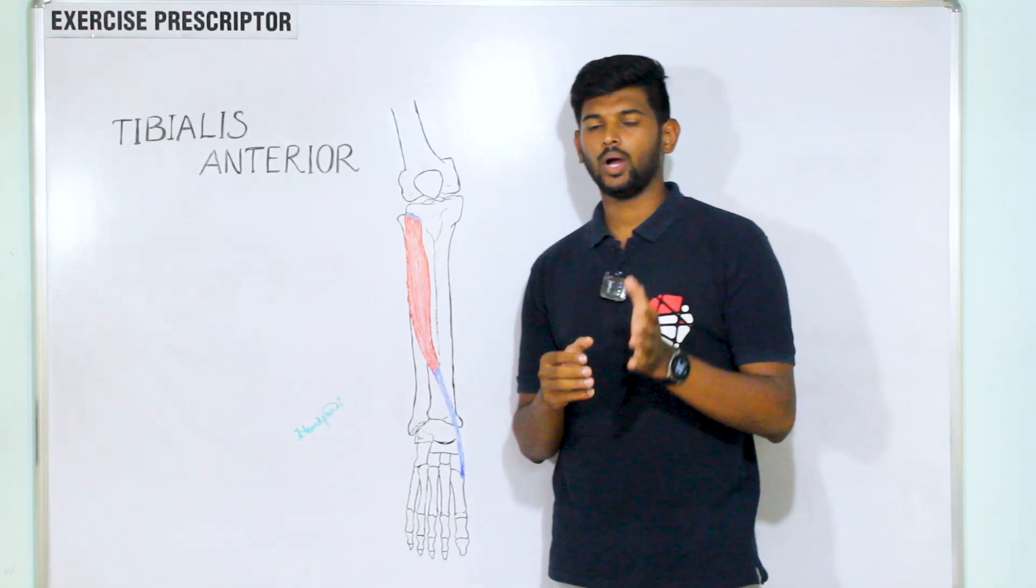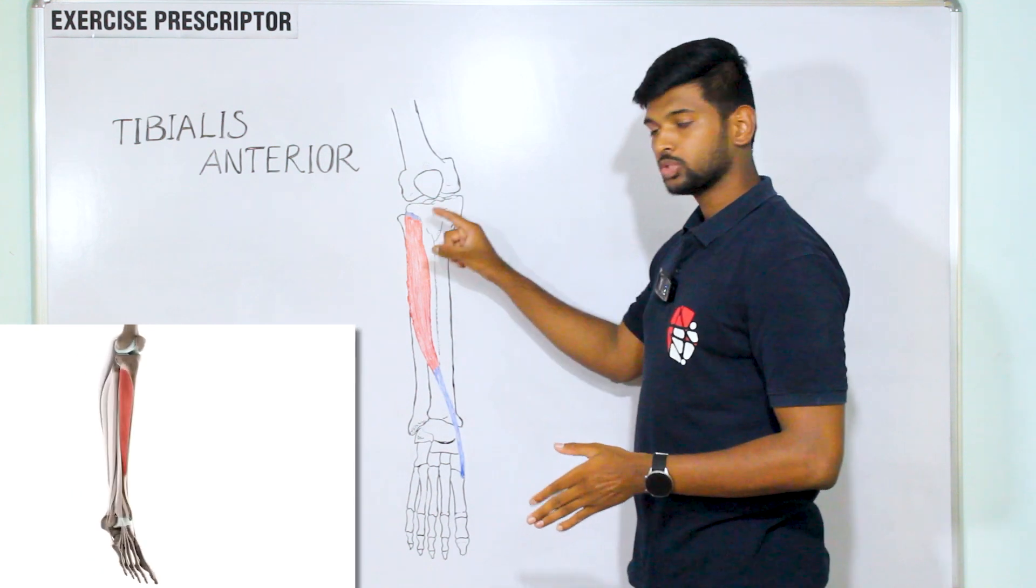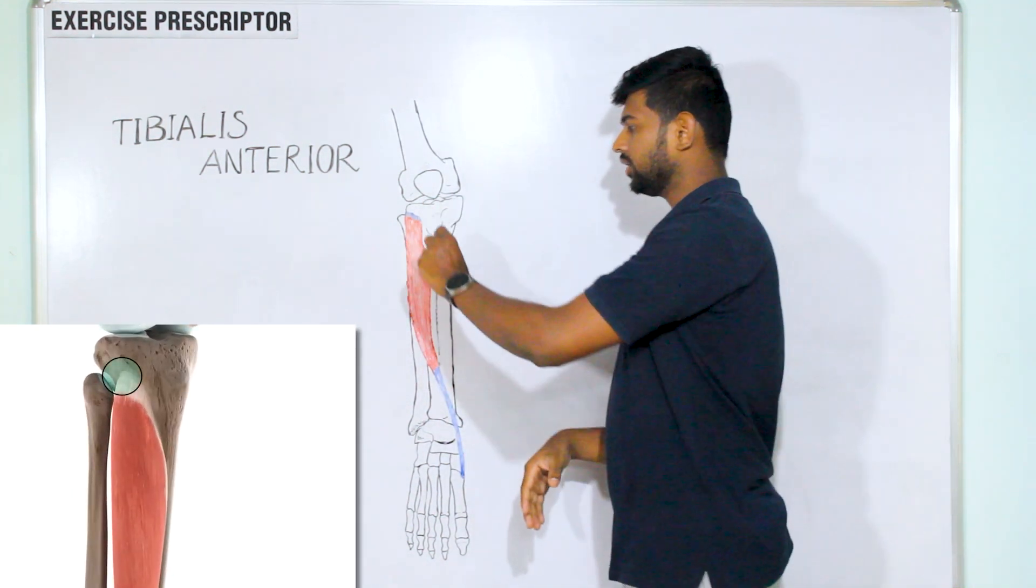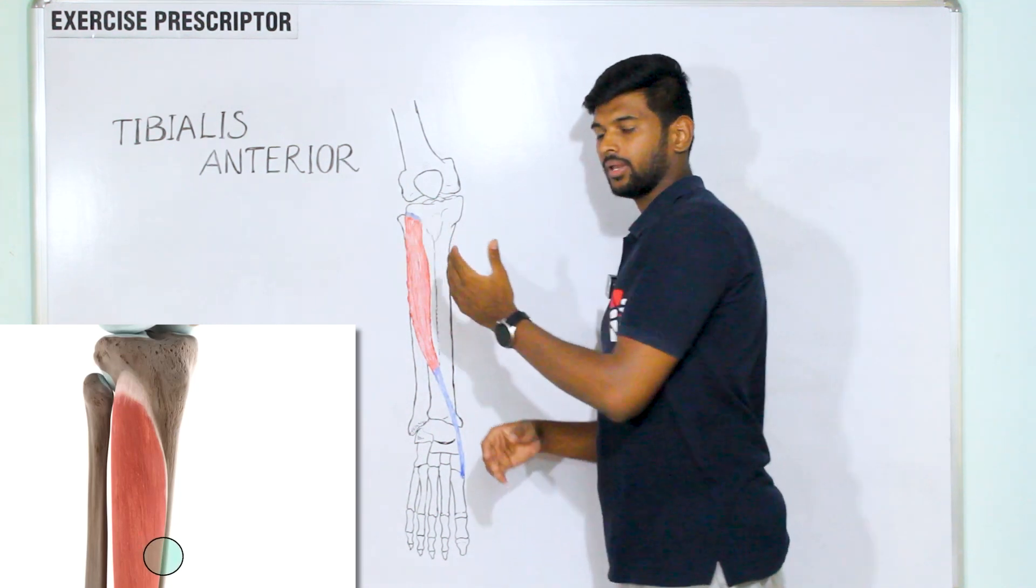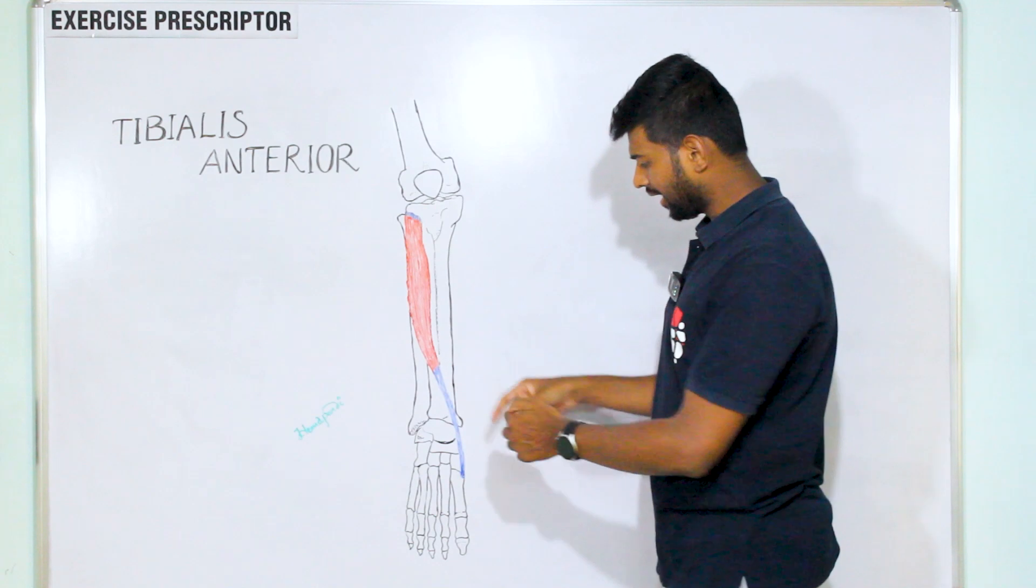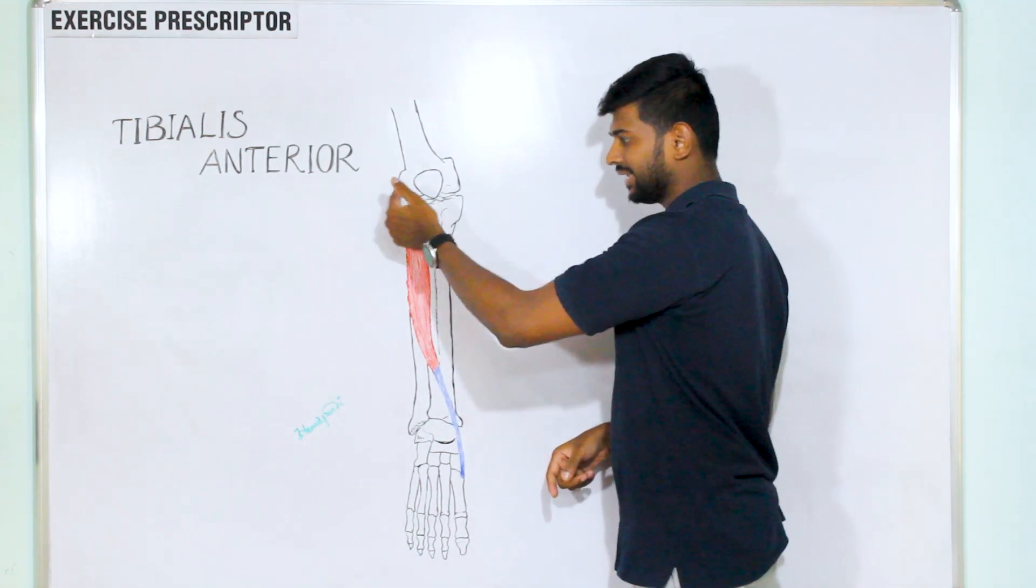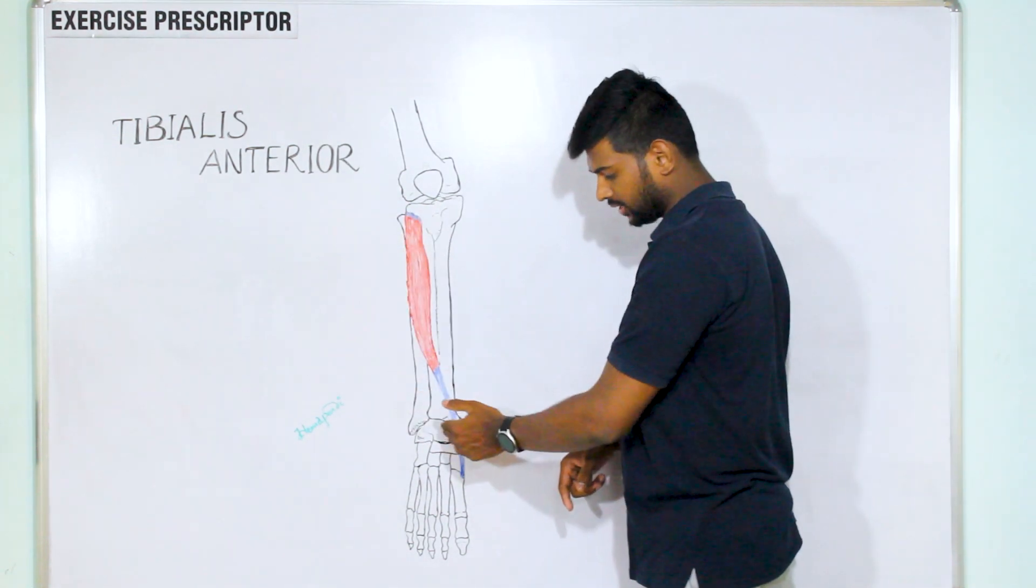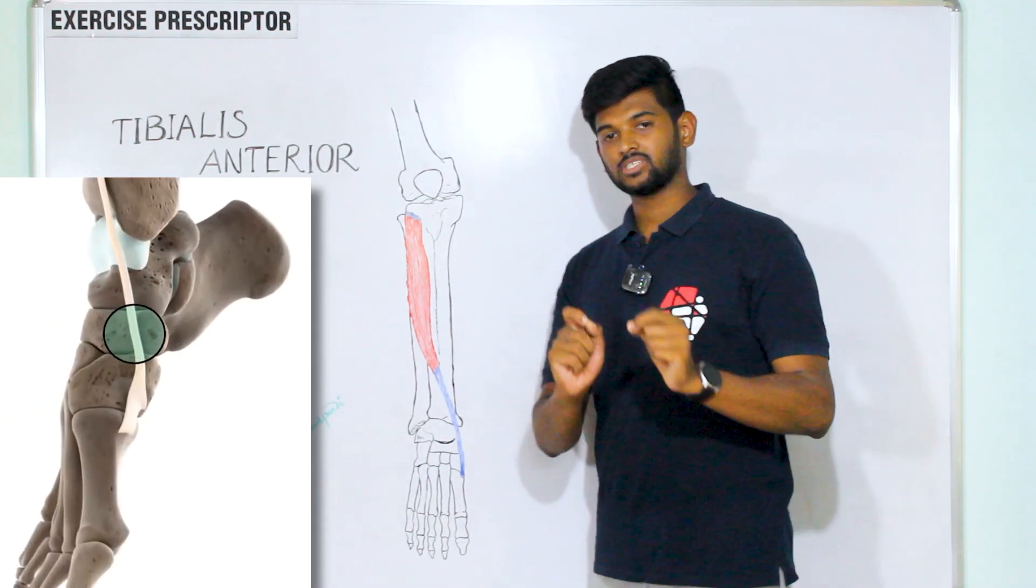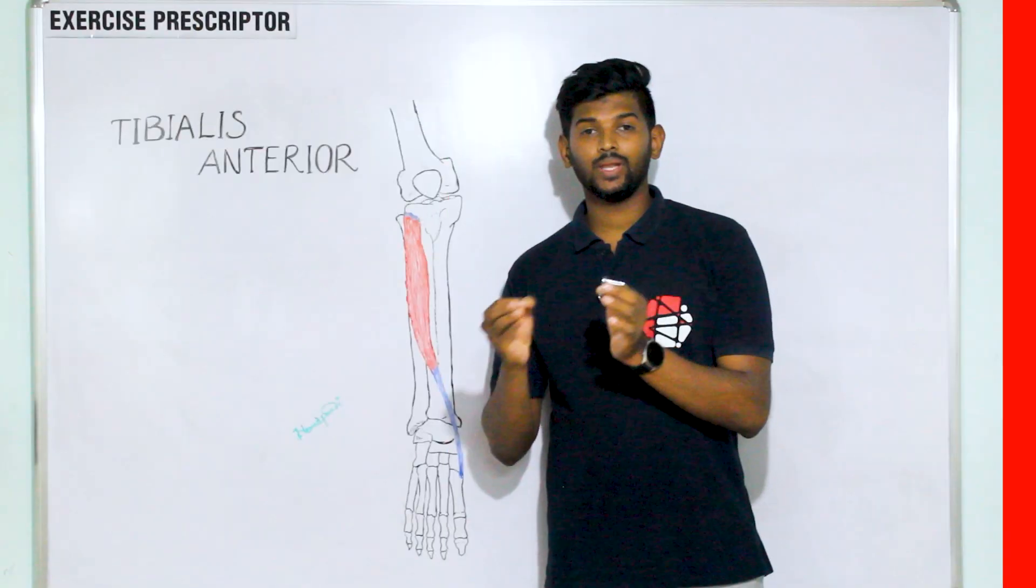Next we'll move into attachment of tibialis anterior muscle. Proximally it attaches over the anterior aspect of the lateral tibial condyle and also proximal interosseous membrane. The tibialis anterior muscle passes the ankle joint medially. It starts laterally proximally and passes the ankle joint medially, and distally attaches over the first cuneiform and first metatarsal bone.